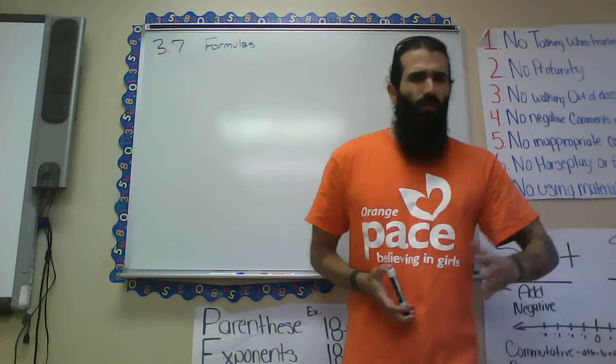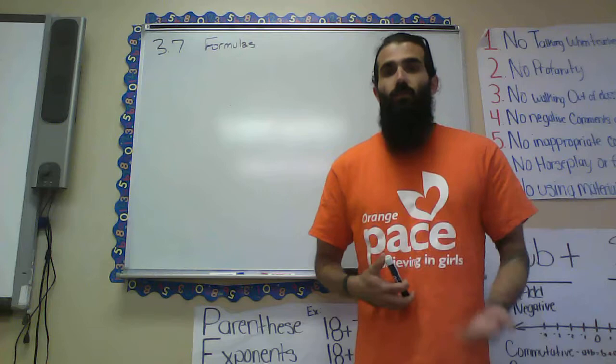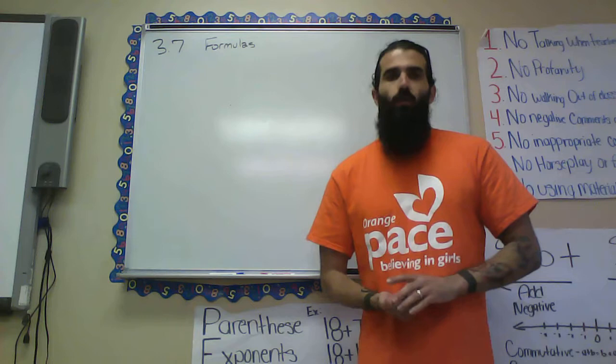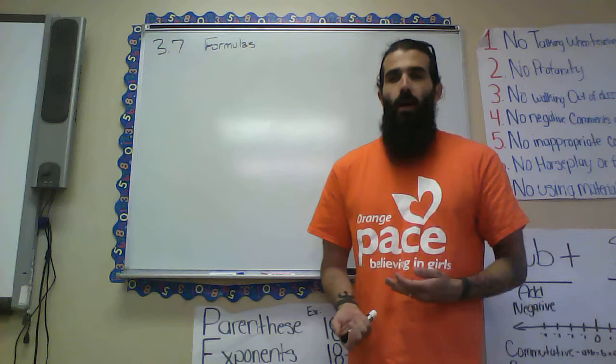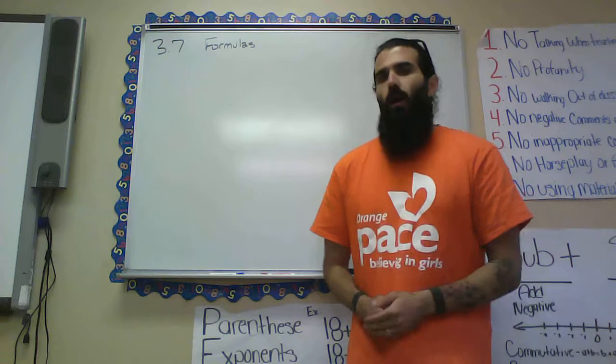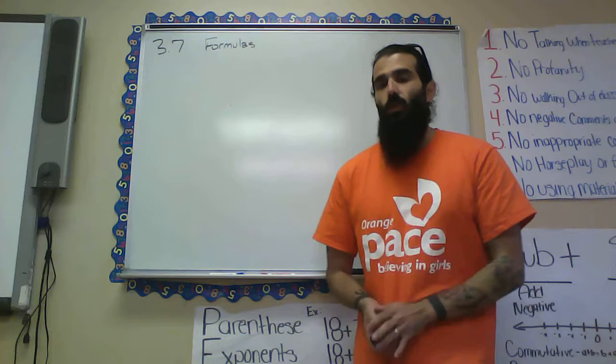Now we're going to look at — and we previewed this a little earlier last week — solving an explicit formula. This isn't going to be something like 3x + 5 = 2. This is going to be the types of formulas that scientists have already figured out in order to help them do algebra and solve for things that are really difficult to measure.